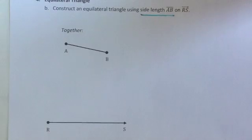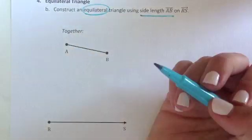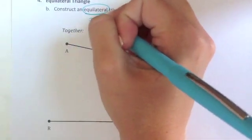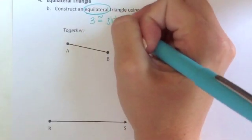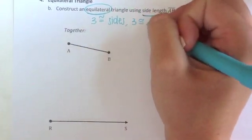The first thing we need to know is what an equilateral triangle is. It has 3 congruent sides and 3 congruent angles.